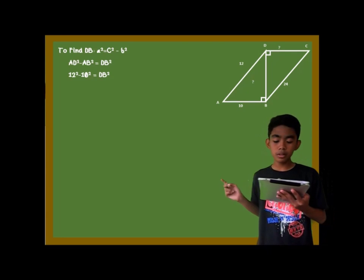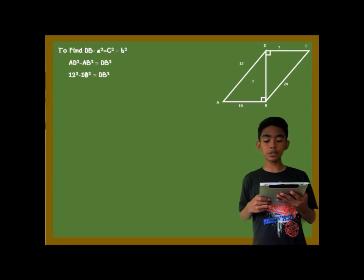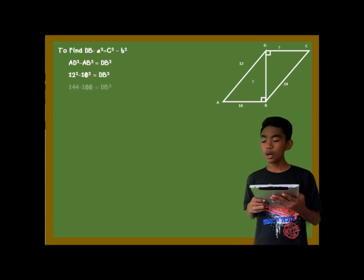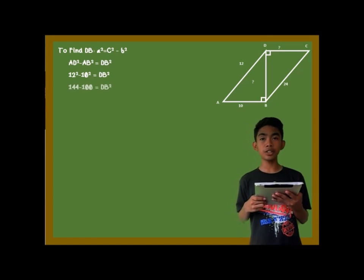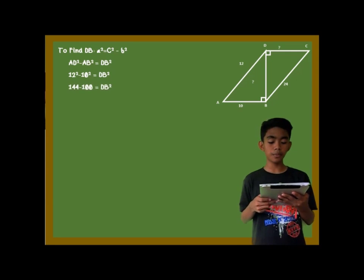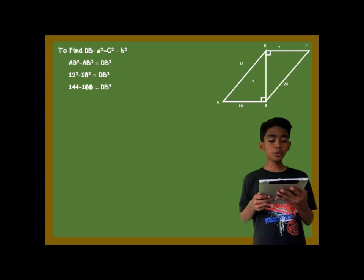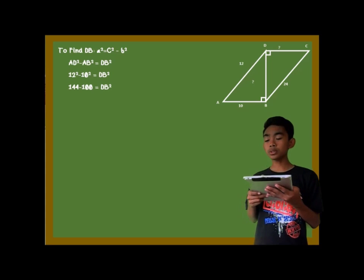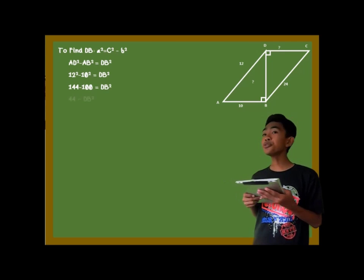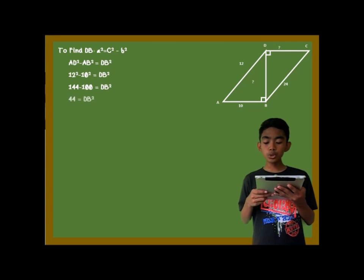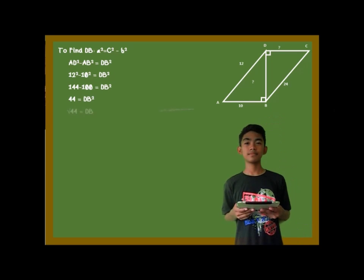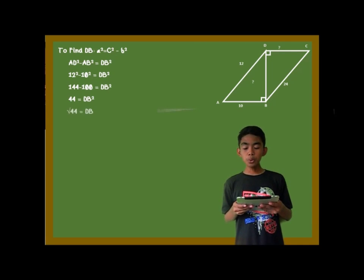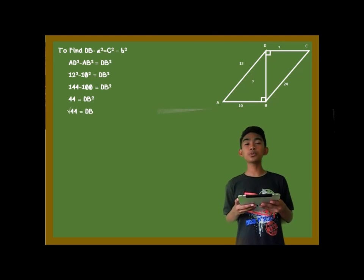We use this equation because we are finding the other leg of the triangle. So first, 12 squared minus 10 squared is equal to DB squared. Then, 144 minus 100 is equal to DB squared. To find DB, we take the square root of the difference of 144 and 100, which is equal to the square root of 44, or 2 square root of 11. So DB is equal to 2 square root of 11.